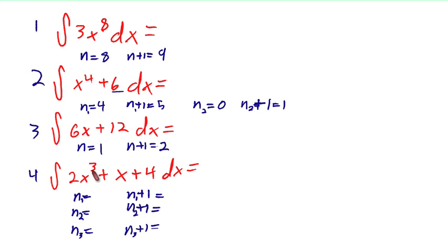For the first term, n equals 3, n plus 1 equals 4. For the x term, n2 equals 1, n2 plus 1 equals 2, and then 0 and 1. This is very straightforward stuff. You're just looking for what your n's are.